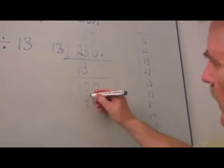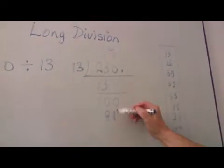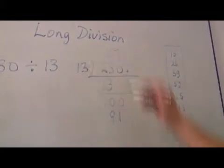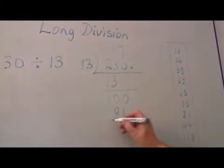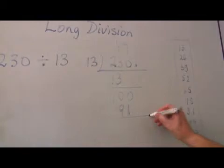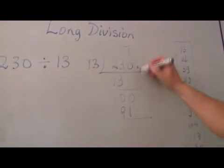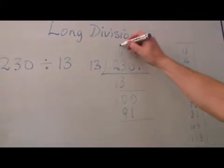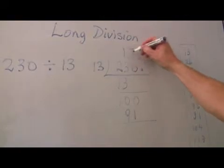And I'll put the ninety-one there. Normally what I'd do is say seven threes are twenty-one, seven ones are seven, eight, nine, ninety-one. Now here's the decimal point. So my answer at the moment is seventeen here.